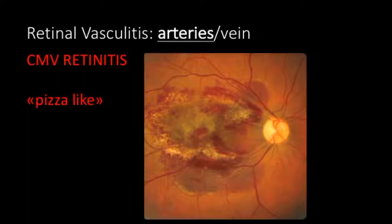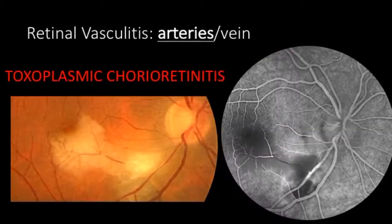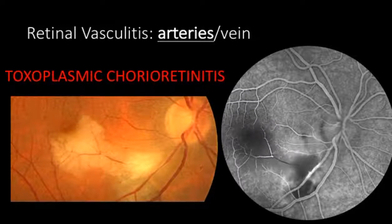This is a patient with CMV retinitis in an HIV-positive patient with a classic pizza-like presentation. Another example is this focal retinitis associated with retinal whitening. The fluorescent angiography revealed arterial involvement and a very ischemic macula, and this is a case of toxoplasmic chorioretinitis.